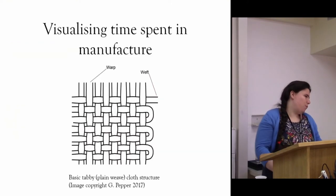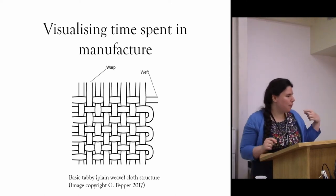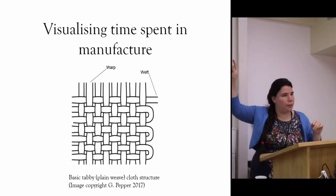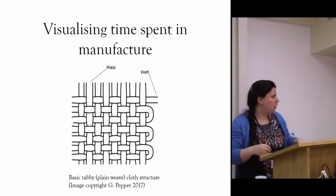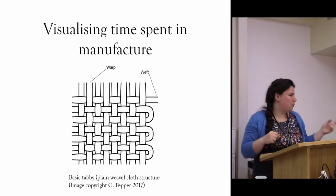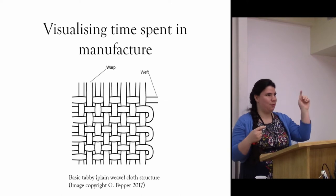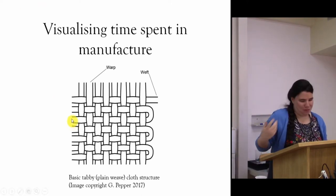That brings me to visualizing time spent in manufacture. This is a diagram of a very basic cloth structure. The warp are the vertical threads which are mounted onto the loom prior to weaving. The weft is the thread that moves in between them. A friend of mine said you can keep that in your head by thinking that the weft moves left to right.